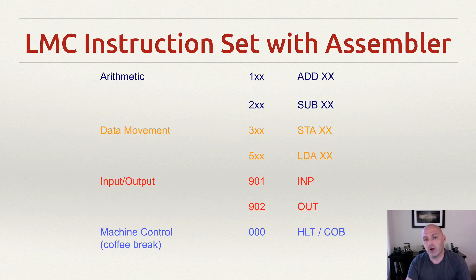Let's take a look now at some of our instructions. I don't have them all here because I've left the branching ones out and their corresponding assembly. So we have our arithmetic, our add and subtract, and you can see that the assembly language constructs there are add and subtract. For data movement, we have store and load, STA or LDA. Input and output are very straightforward, INP and OUT. And then the machine control, we have HALT or HLT.